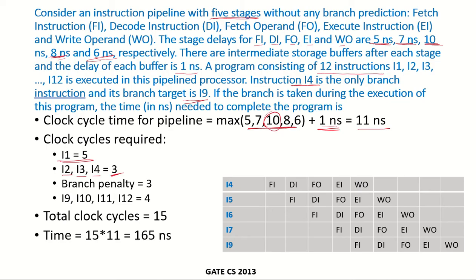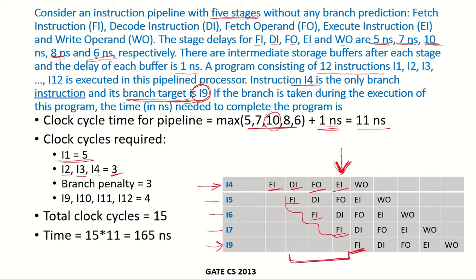Now let us see what happens when instruction i4 is in the pipeline. When i4 is in the pipeline, it passes through the fetch instruction stage, decode instruction, fetch operand, and then the execute instruction stage. This is the stage where the branch target address is computed. But in the meantime, 3 instructions would already have come into the pipeline. So, what is the branch penalty?